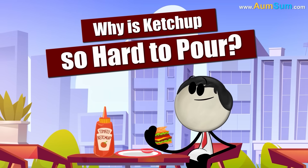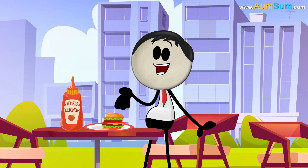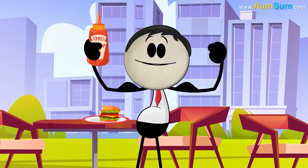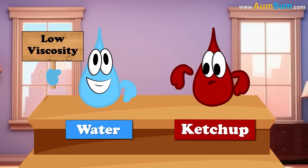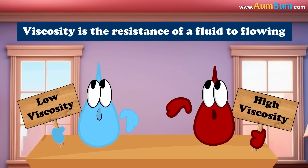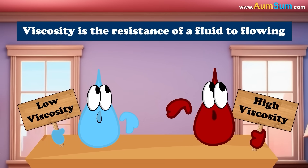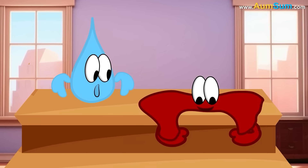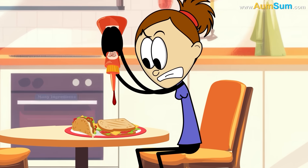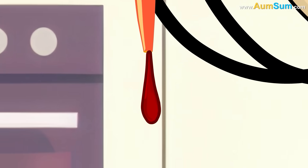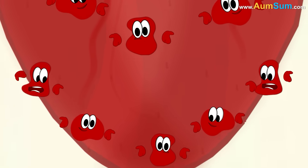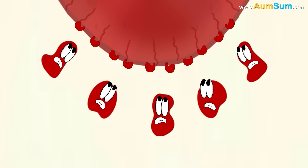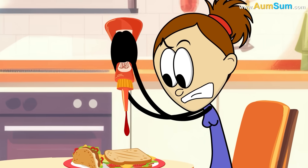Why is ketchup so hard to pour? Simple — because nobody is as strong as Omsum! Firstly, as compared to water, ketchup has a higher viscosity. Viscosity is the resistance of a fluid to flowing. That means ketchup provides more resistance to flowing as compared to water. Ketchup consists of many ingredients, but the solid parts of the ketchup — the tomato bits — are actually touching each other. This physical connection of the tomato bits gives ketchup the strength to resist flowing. Hence, ketchup is so hard to pour.